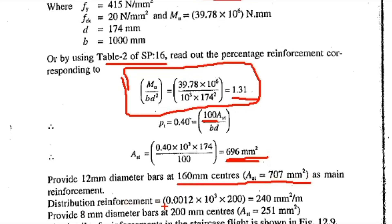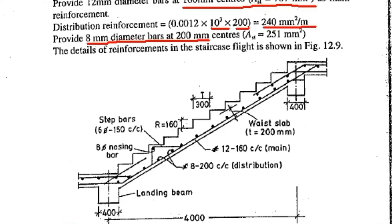Distribution reinforcement is 0.12% of the cross-section: 0.0012 into 1000 into 200 equals 240 mm². Provide 8 mm diameter bars at 200 mm centre to centre, giving Ast of 251 mm². The minimum required is 240 mm² and we provide 251 mm².